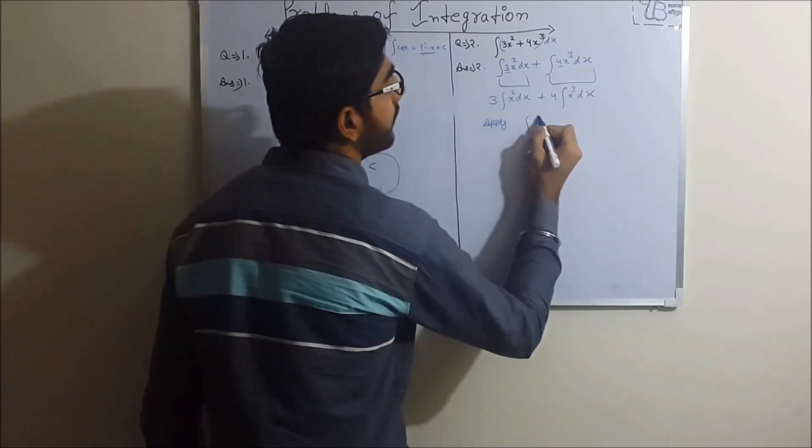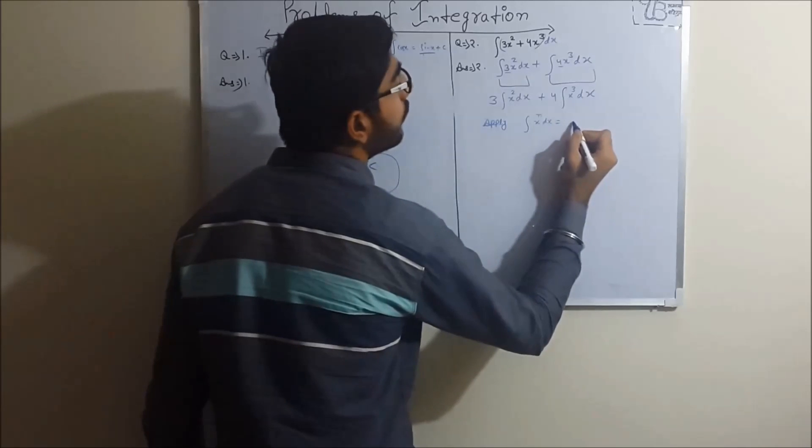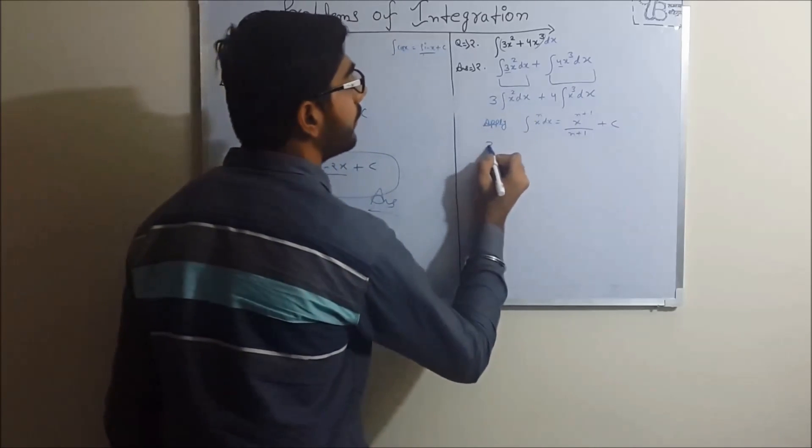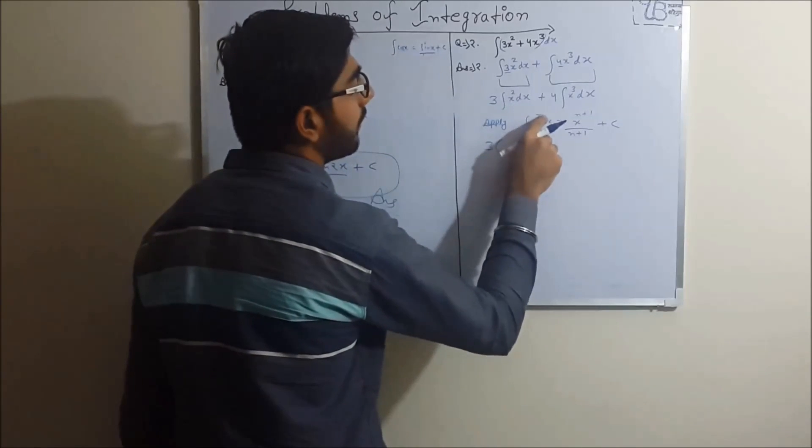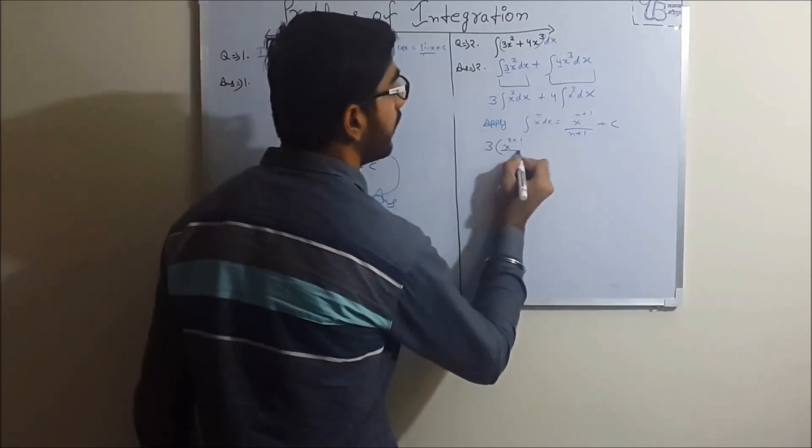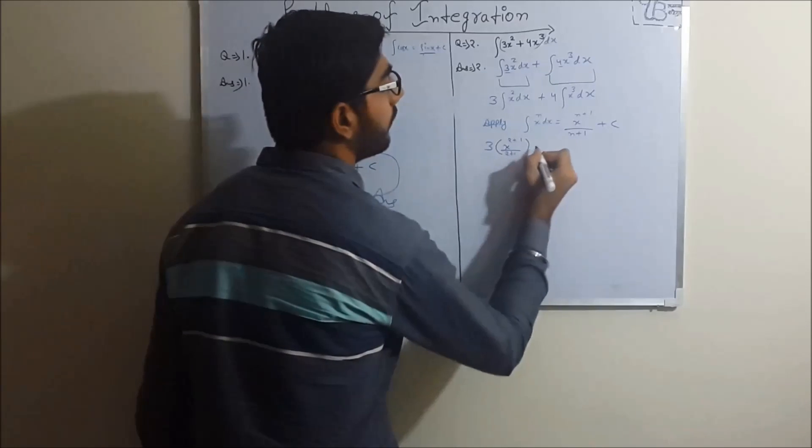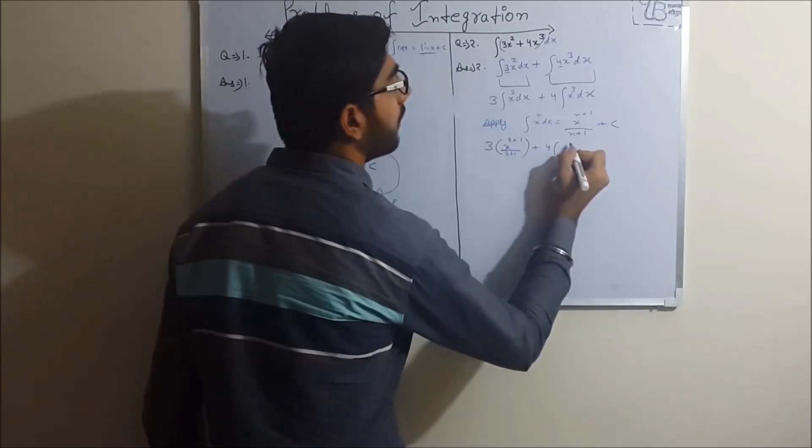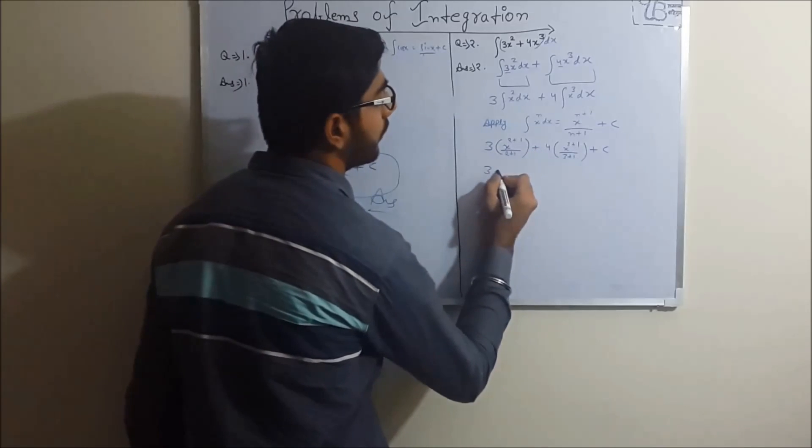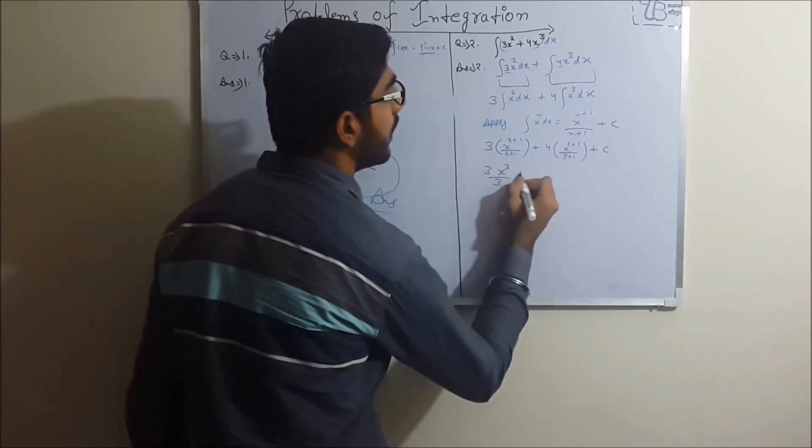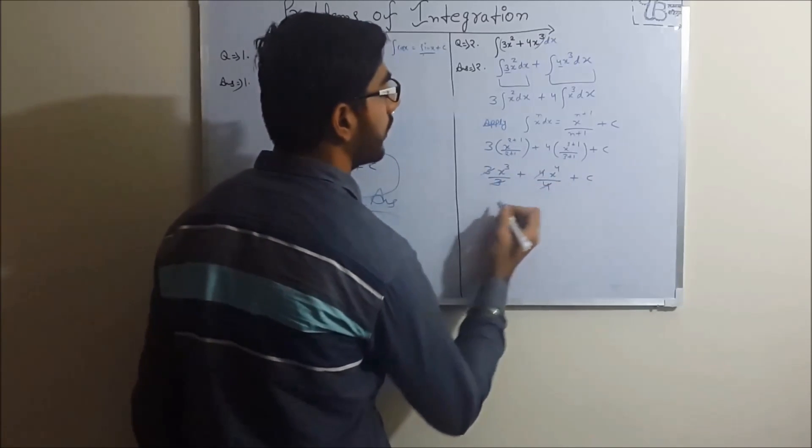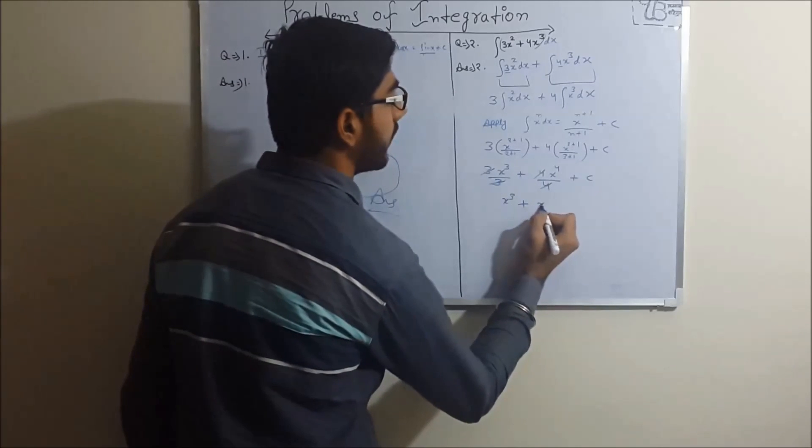Integration of x^n dx equals x power n plus 1 divided by n plus 1 plus c. So 3 times integration of x power n, here n is 2, so x power 2 plus 1 divided by 2 plus 1. Now 4 times x power 3 plus 1 upon 3 plus 1 plus c. So this is: 3 times x cube divided by 3 plus 4 times x to the 4 upon 4 plus c, which equals x cube plus x to the power 4 plus c.